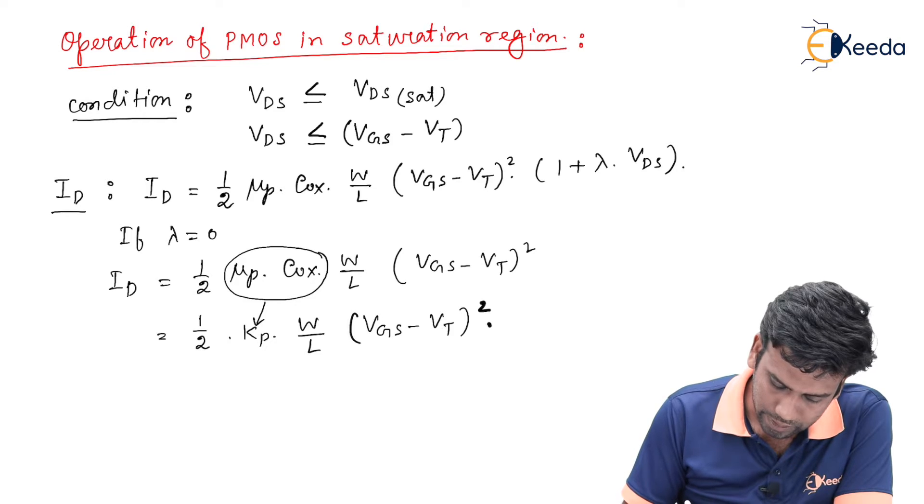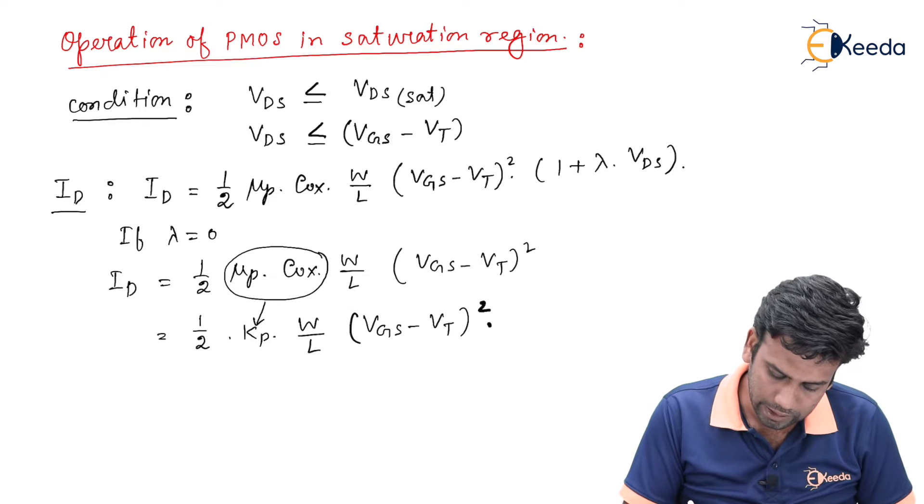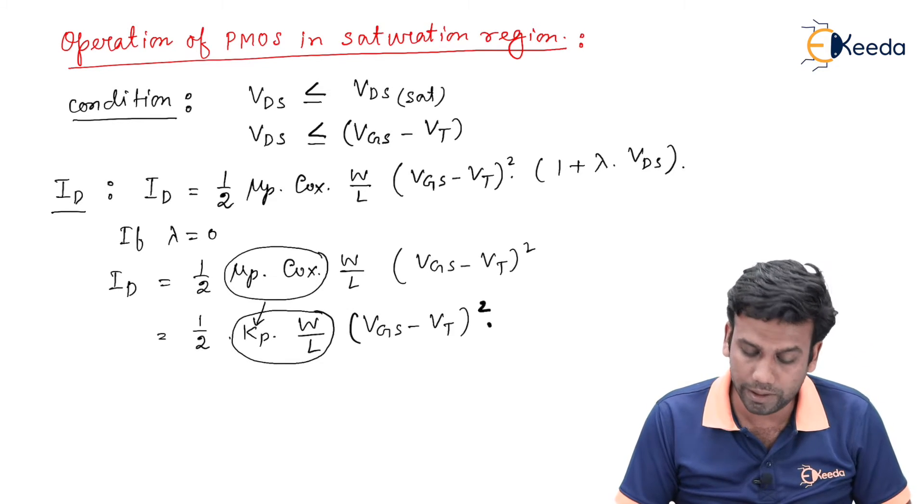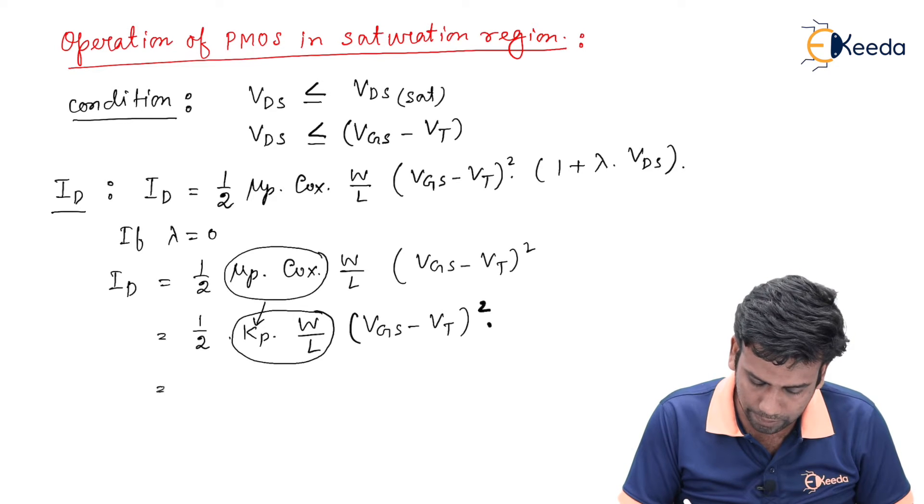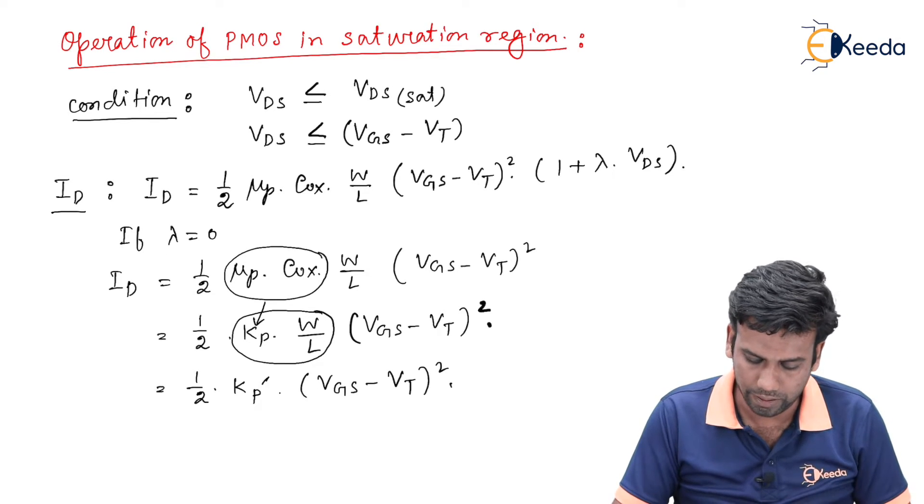Now, this whole term can also be written in this format: if the K_P value is constant and W by L is constant, it can be further written in single constant, so that is K_P' (VGS minus VT)².